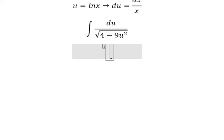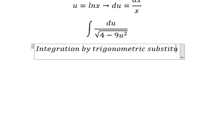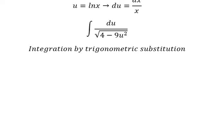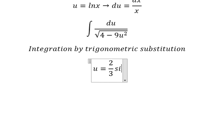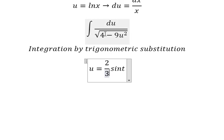Next, we need to use integration by trigonometric substitution. I will put u equals to 2 over 3 sin(t). Because if I put this one in here, we have 4 over 9 sin²(t). Number 9 and number 9 cancel. Number 4 and number 4, we can do factorization: 1 minus sin²(t), we change to cos²(t). And then we simplify the square root and du.